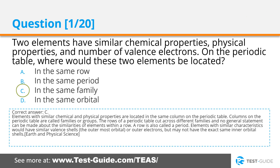The correct answer is C. Elements with similar chemical and physical properties are located in the same column on the periodic table. Columns on the periodic table are called families or groups. The rows of a periodic table cut across different families, and no general statement can be made about the similarities of elements within a row. A row is also called a period.